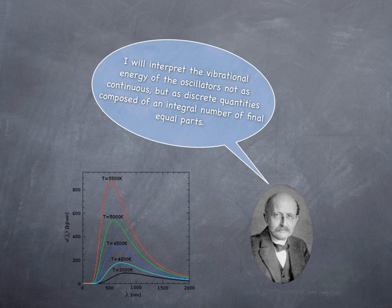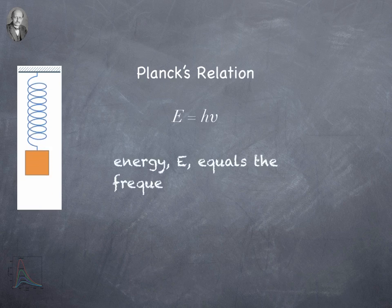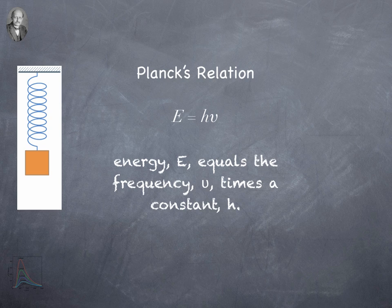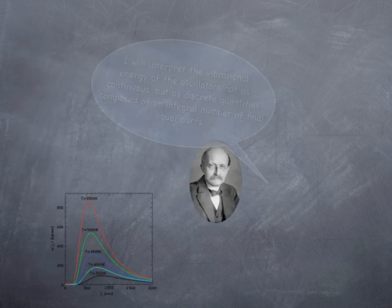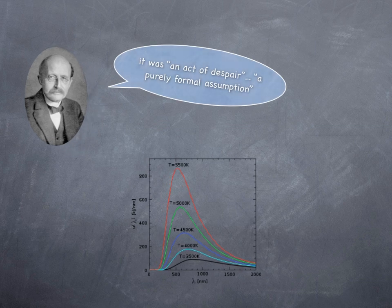So E equals hν means that ν is going to be a whole number: one, two, three, four, and so on. He did it just to make the math work out. He said it was an act of despair — a purely formal assumption — and he didn't think there was any material reality to it, necessarily.